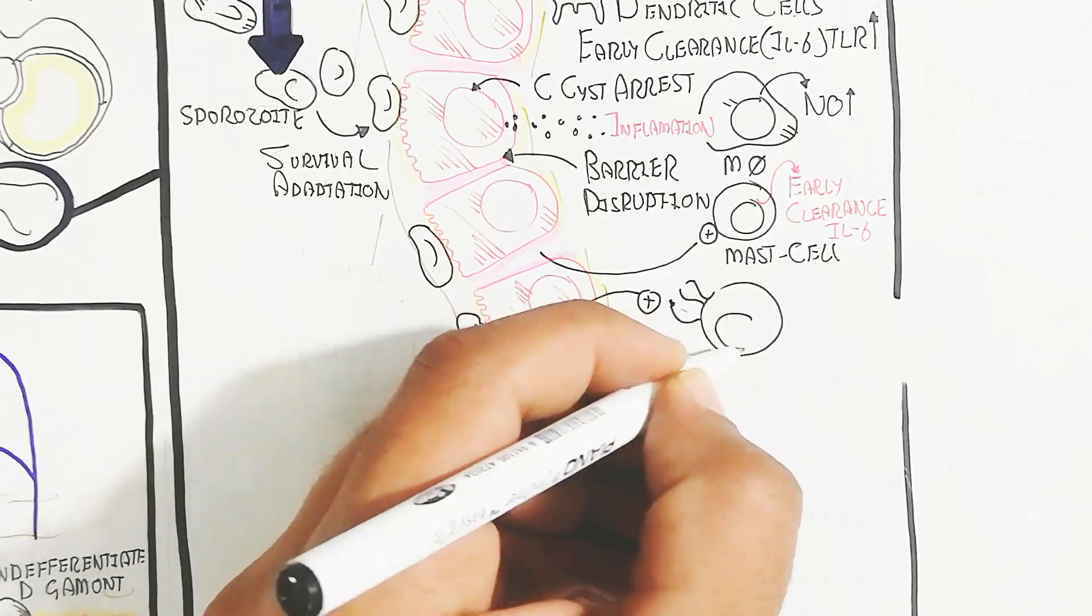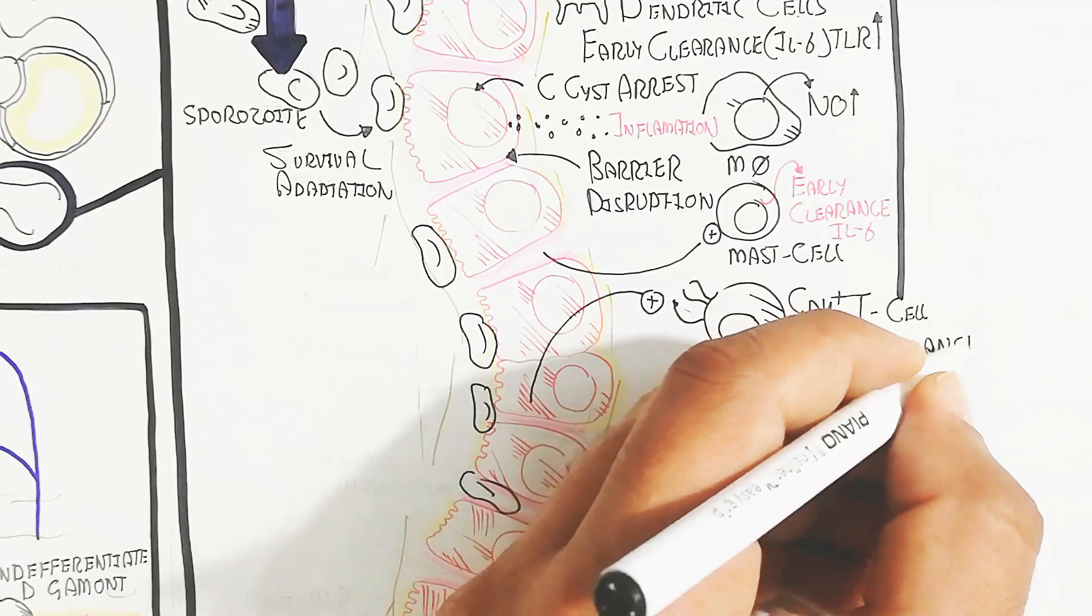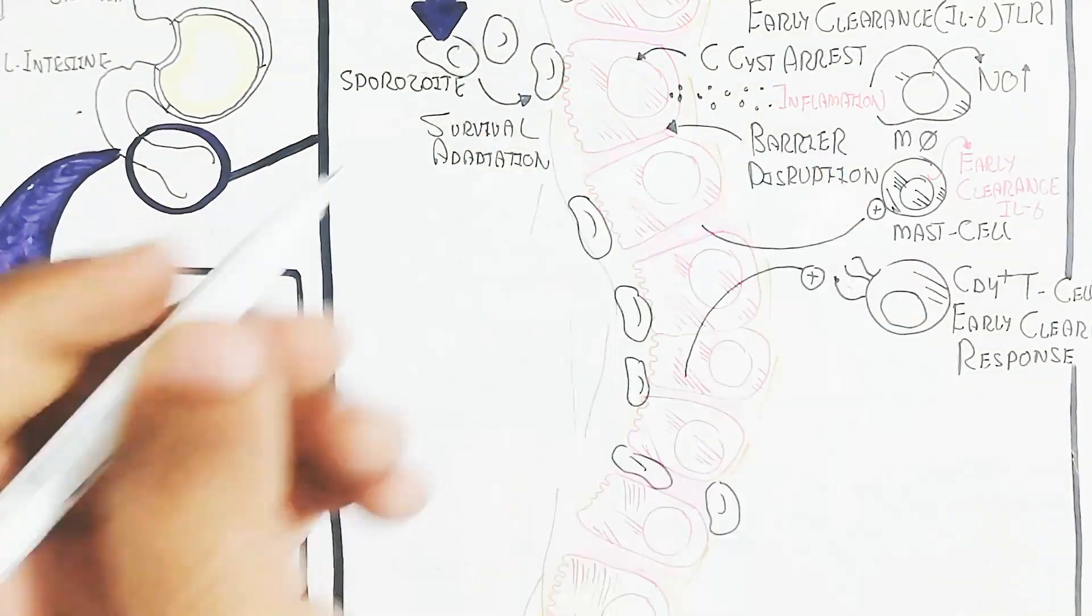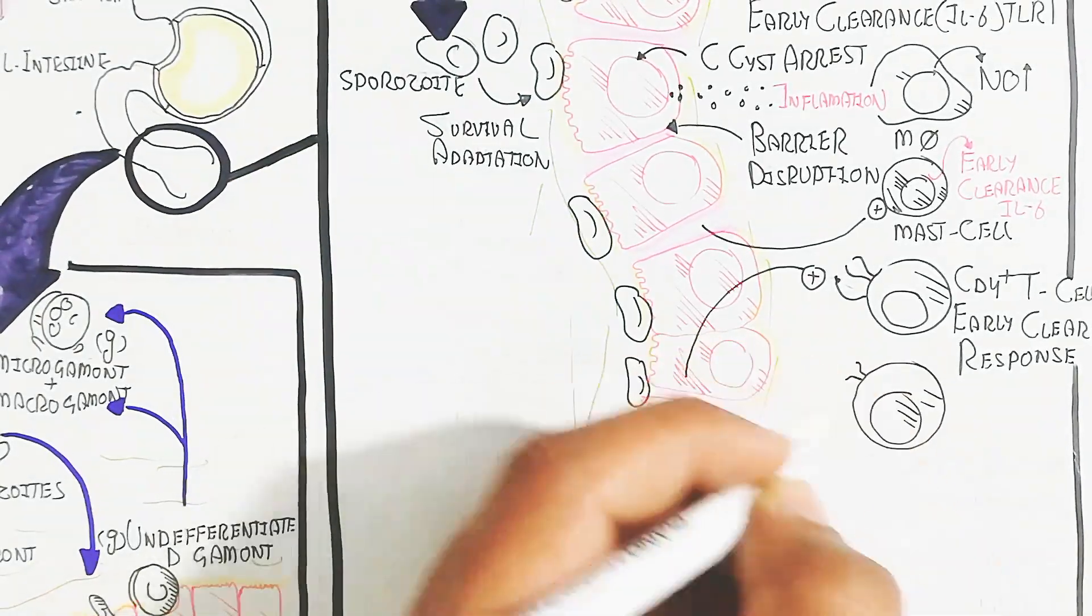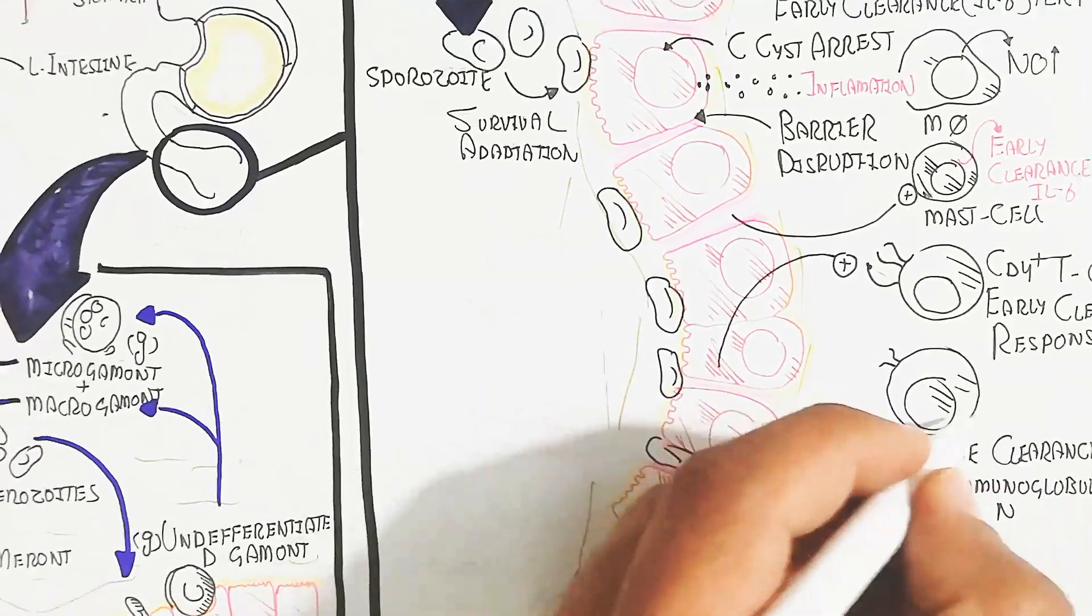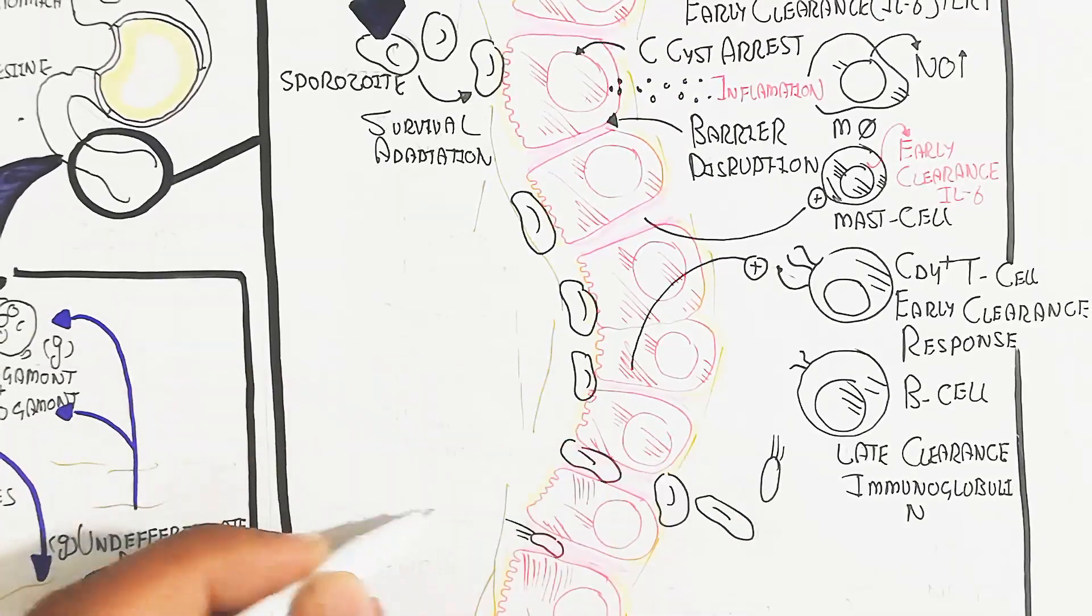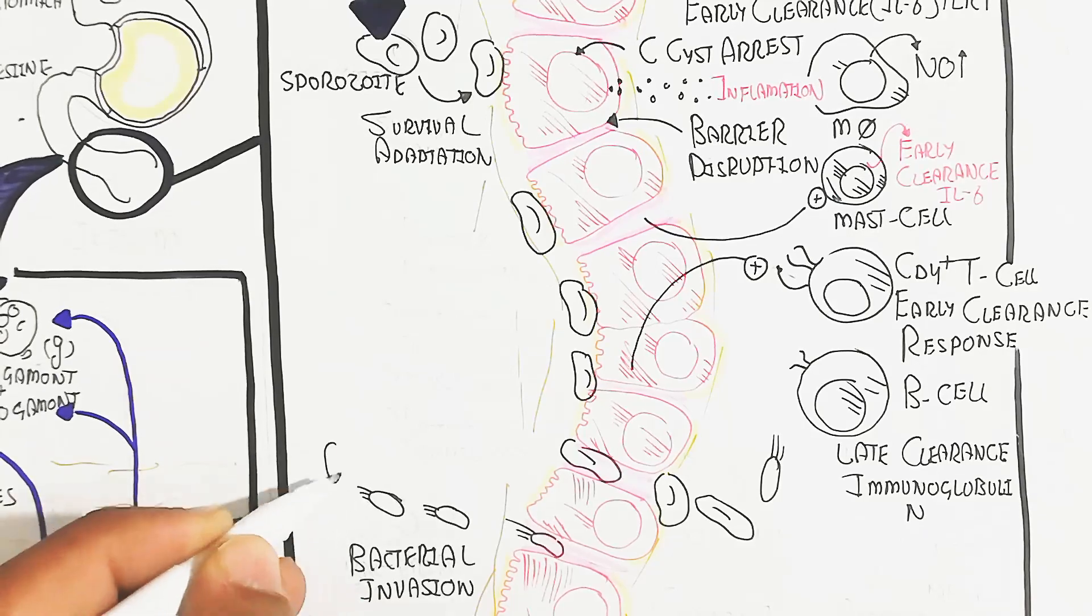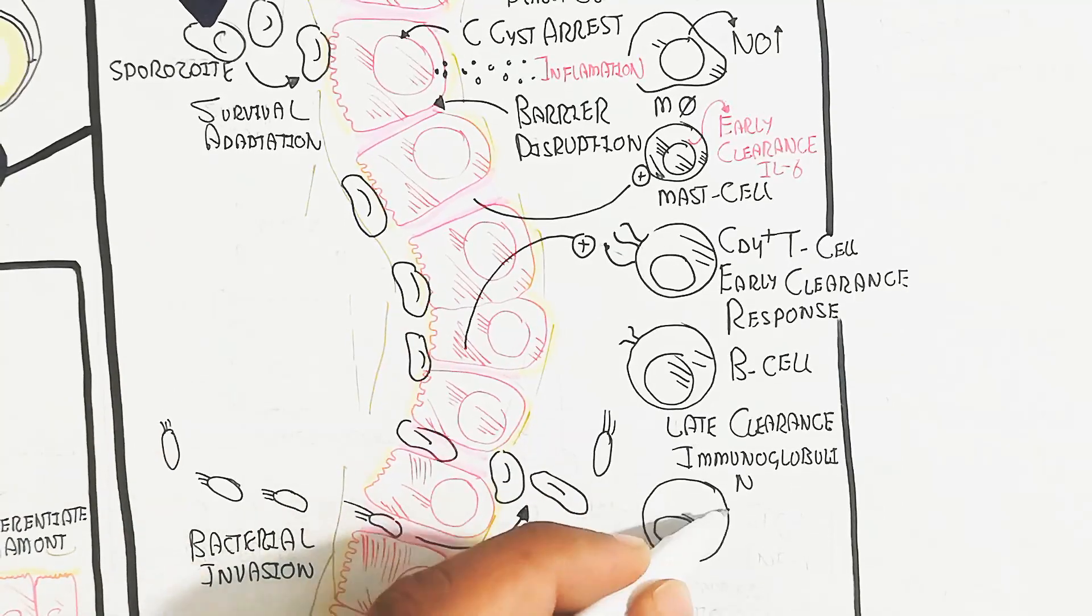It will progress as rupture of the epithelial barrier leads to invasion of the parasite. The CD4 T cell activation early clearance response will lead to late clearance immunoglobulin response from B cells. This will be delayed, which is why chronic inflammation occurs. This chronic inflammation recruits B cells and CD8 cytotoxic T cells. Interferon gamma is recruited, creating an apoptotic microenvironment.